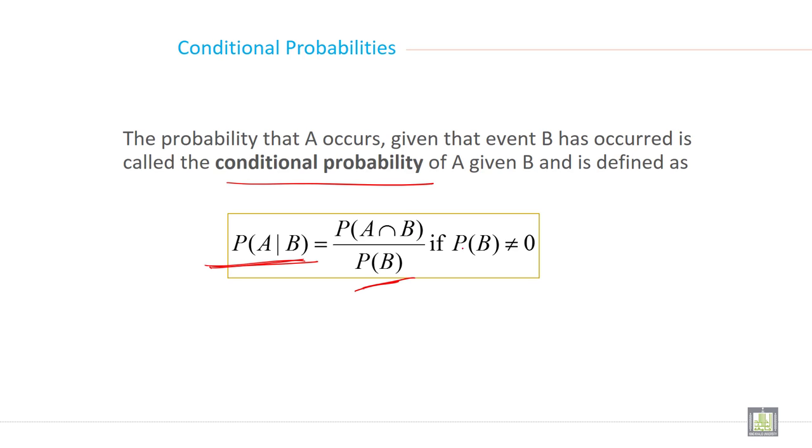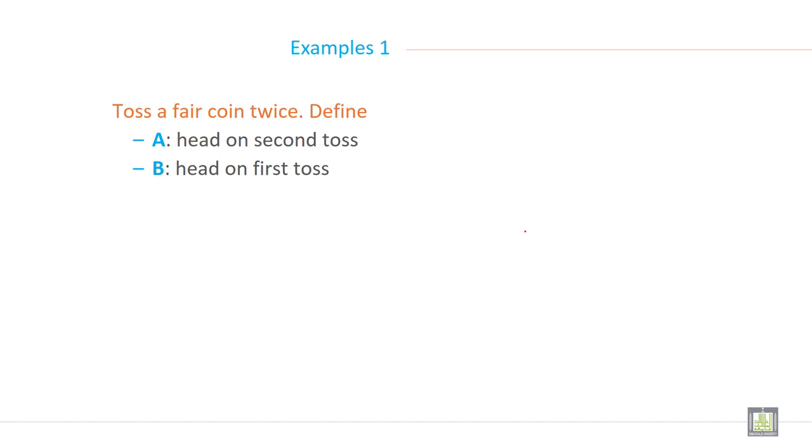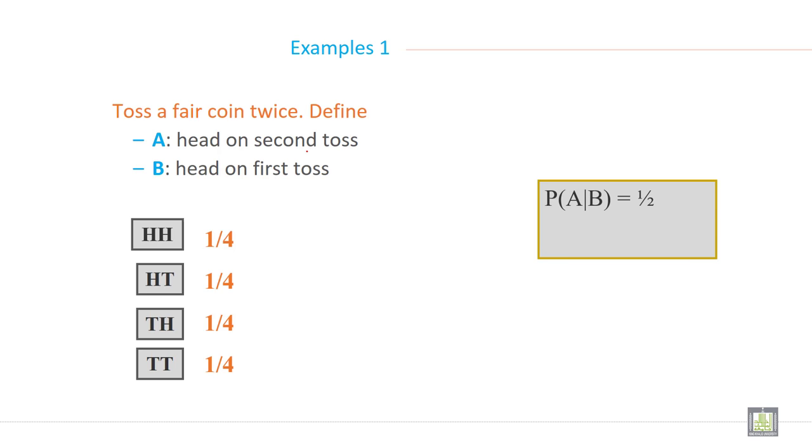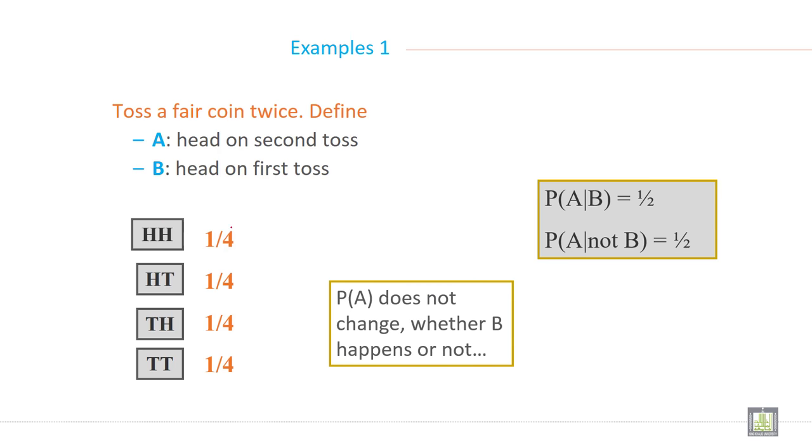Example: toss a fair coin twice. Define A as head on second toss, B as head on first toss. So here, head-head has 1/4 probability, head-tail 1/4, tail-head 1/4, and tail-tail 1/4 probability. So probability of A does not change whether B happens or not.